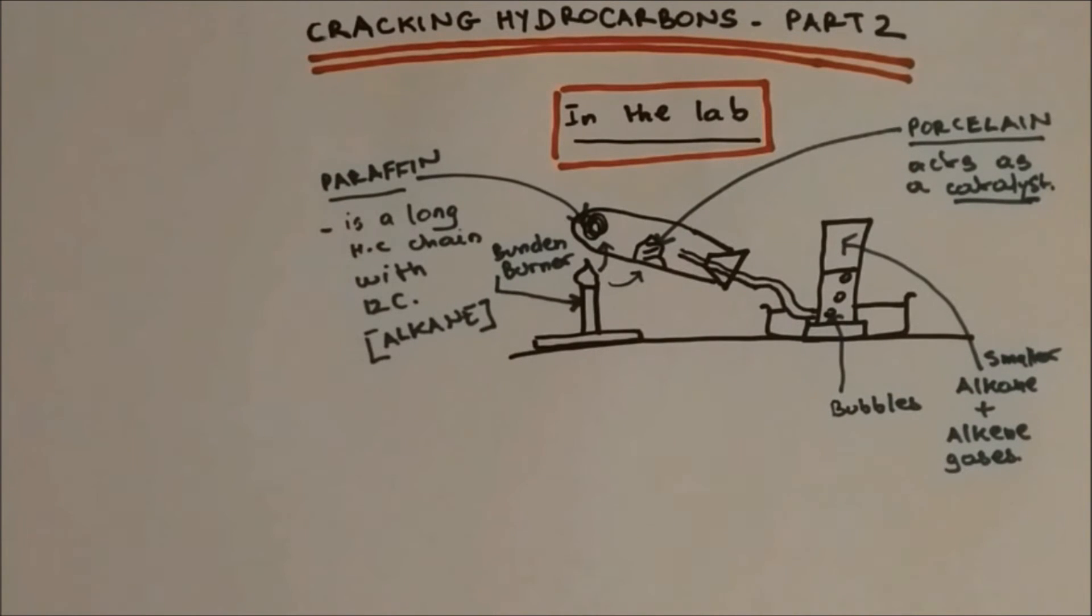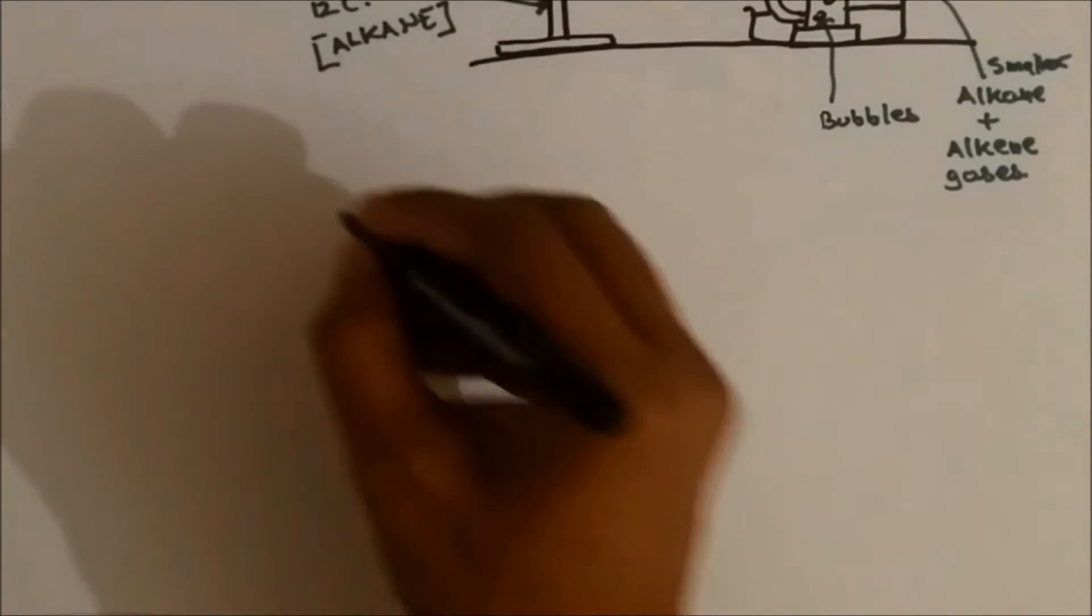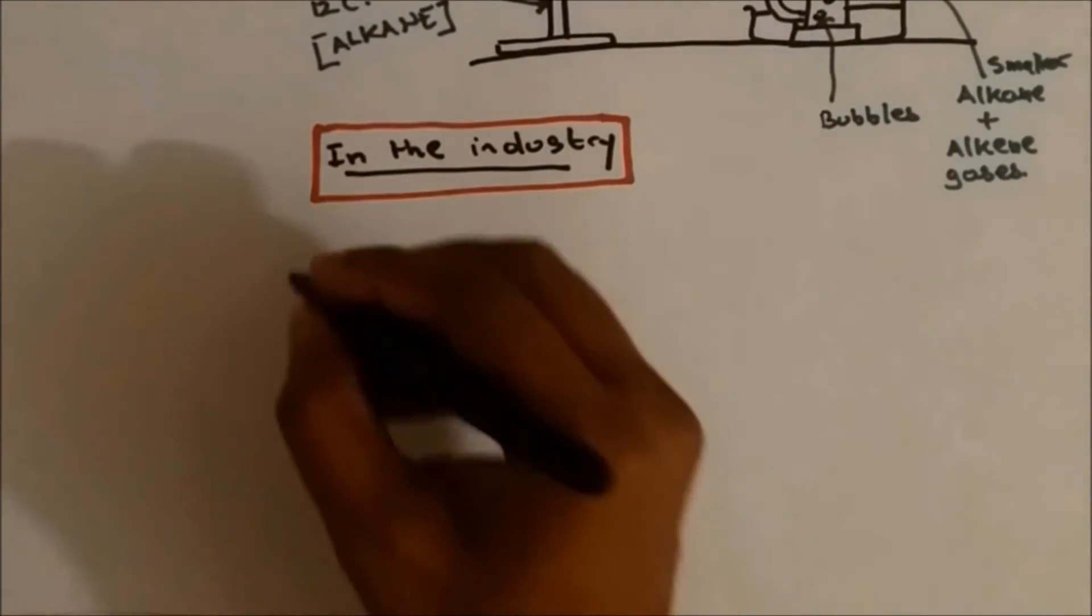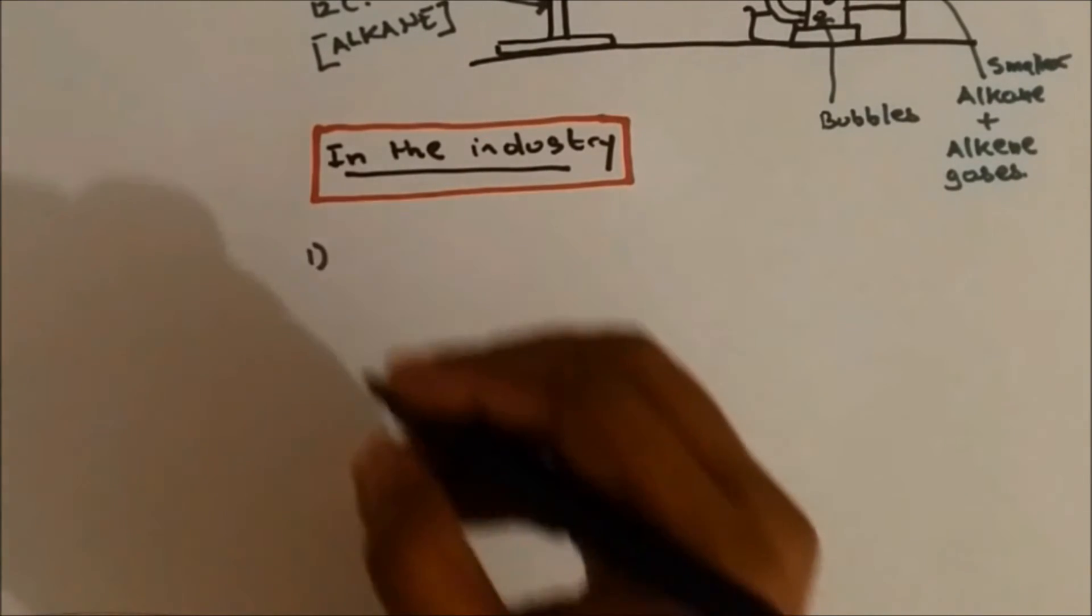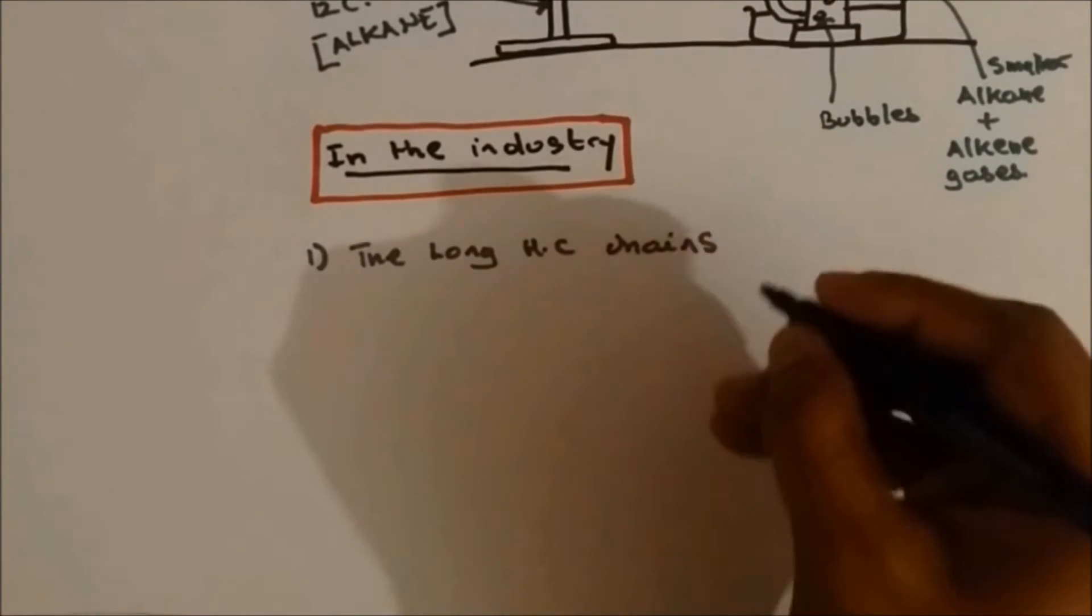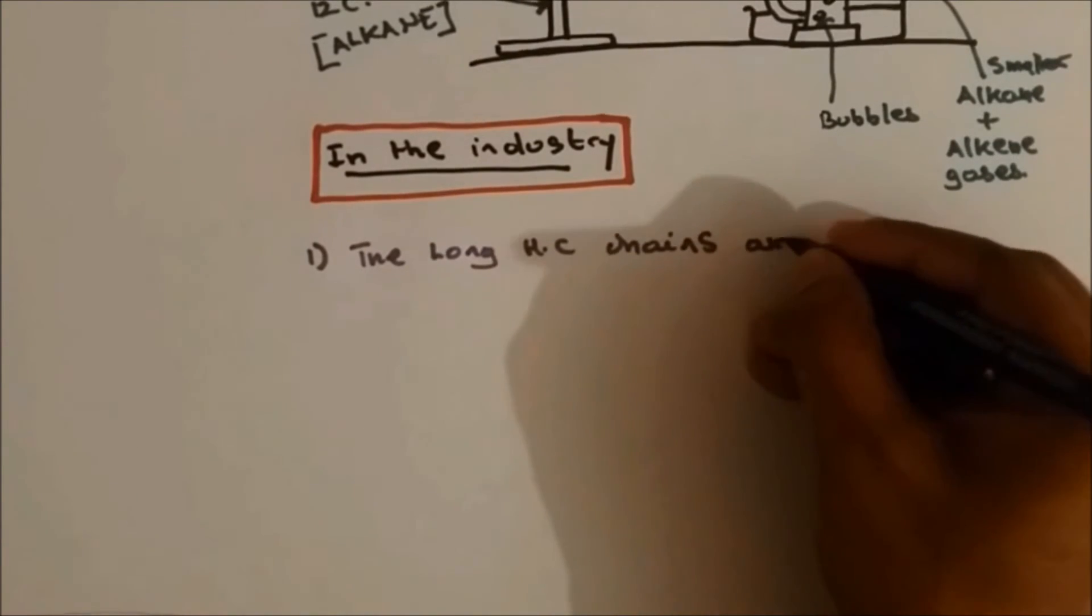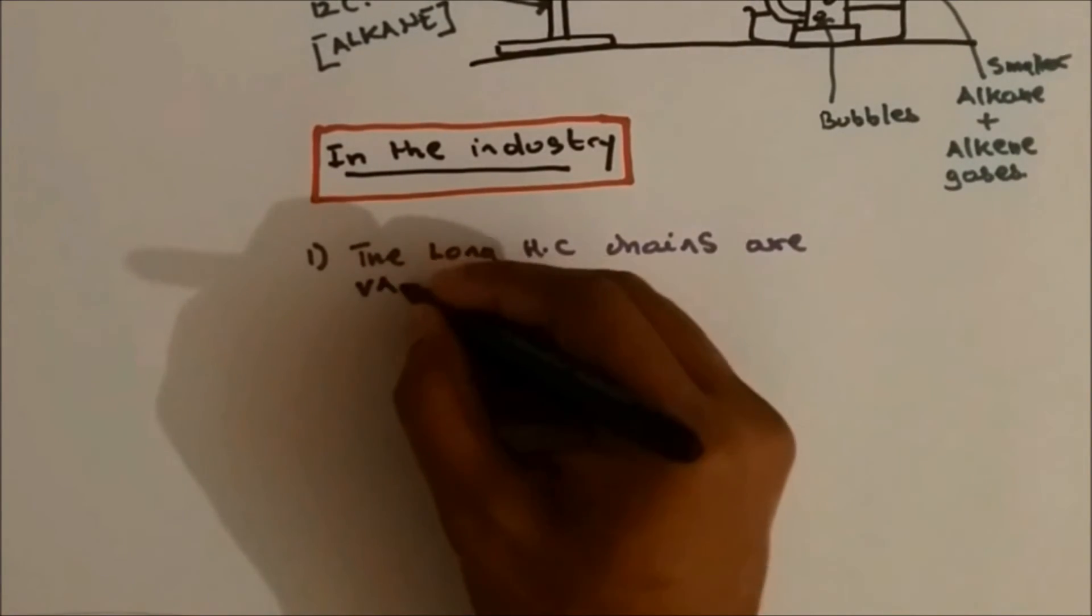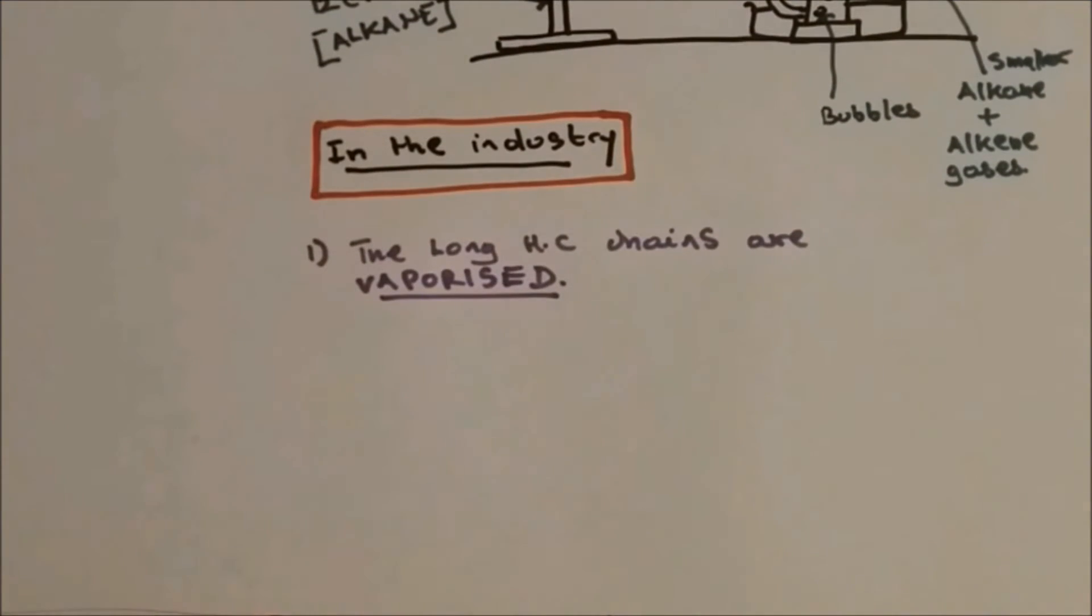Now let's take a look at how cracking is done in the industry. It's a very complicated process, so I'm not going to draw the diagram, but I'm going to tell you how it is done step by step. The first step: the long hydrocarbon chains are vaporized. Vaporized means changing a substance into a gaseous state, so the long hydrocarbon chains which are found as a solid or liquid state will be vaporized, which means will be changed into a gas.